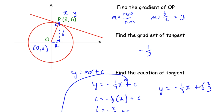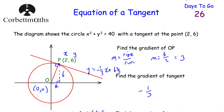You might also see this written as a top-heavy fraction: y equals minus one third x plus 20 thirds, since 6 times 3 is 18, plus 2 is 20. Either form is correct. To recap: find the gradient of the radius, take the negative reciprocal to get the gradient of the tangent, use y equals mx plus c with that gradient, then substitute in the point to find c.